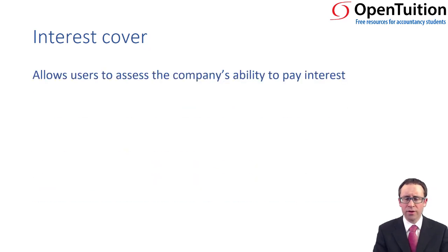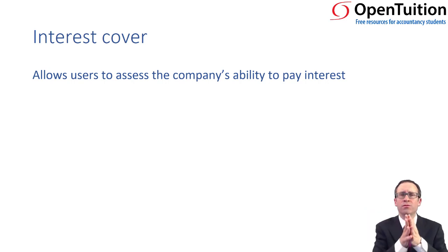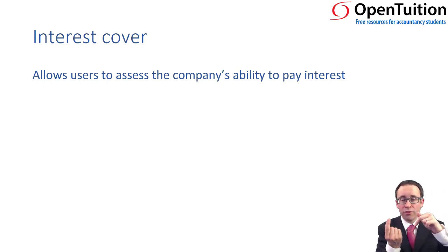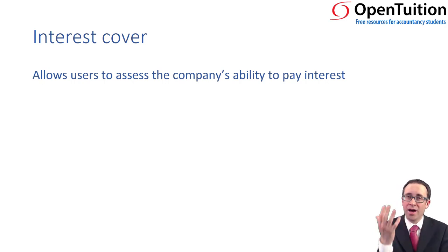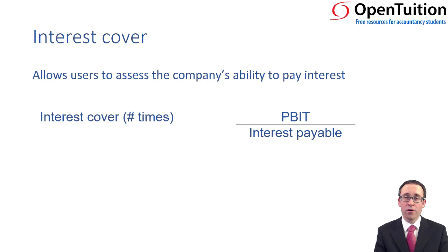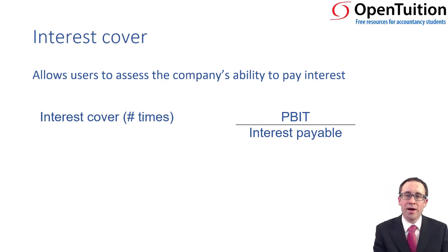Interest cover looks at the ability of the business to pay the interest out of the profits the business is making. If you've got plenty of profits and interest is going up, that's not too big a risk. But if interest is going up because you're borrowing more and profits are falling, your interest cover gets smaller. To measure it, you take your profit before interest and tax — because that is where your interest is paid from — and divide that by your interest payable, effectively your finance costs.